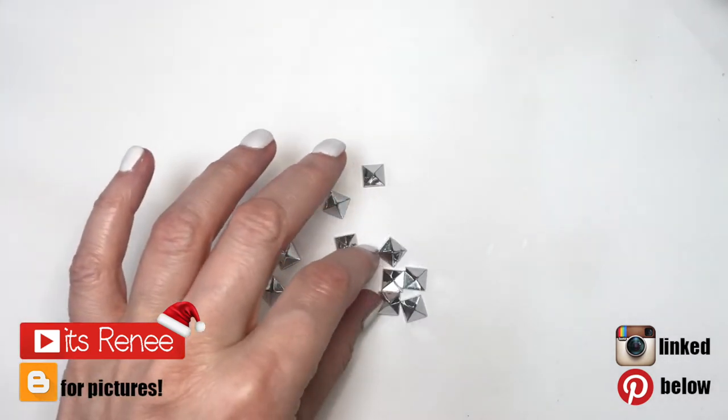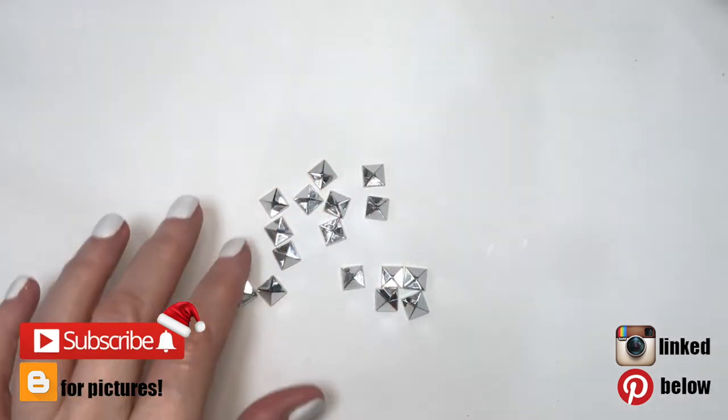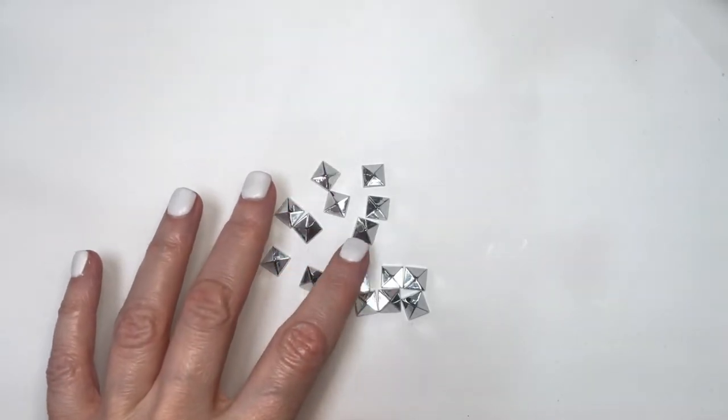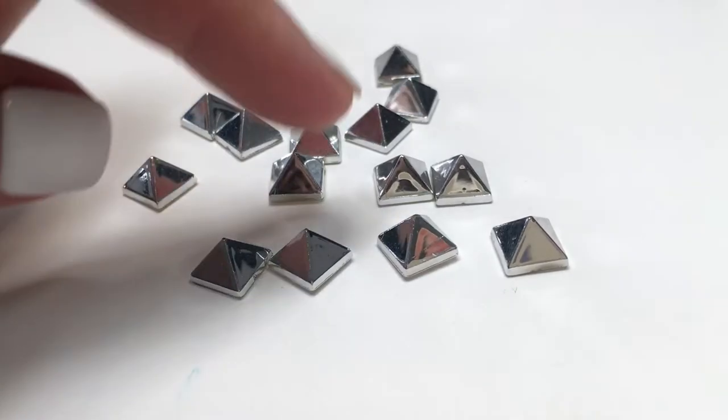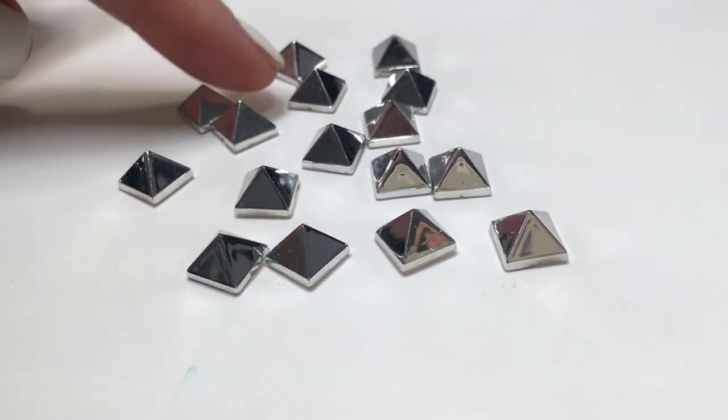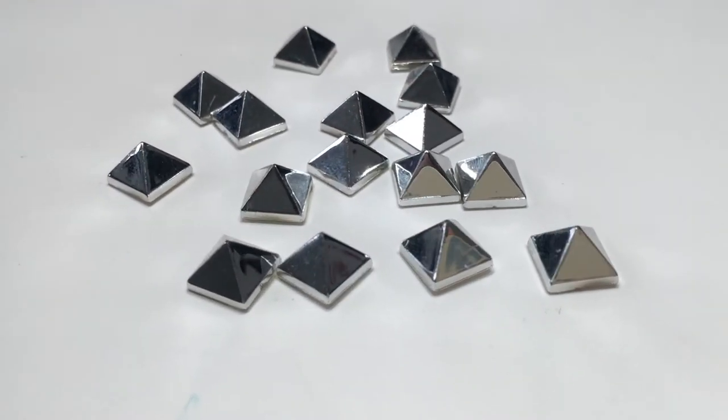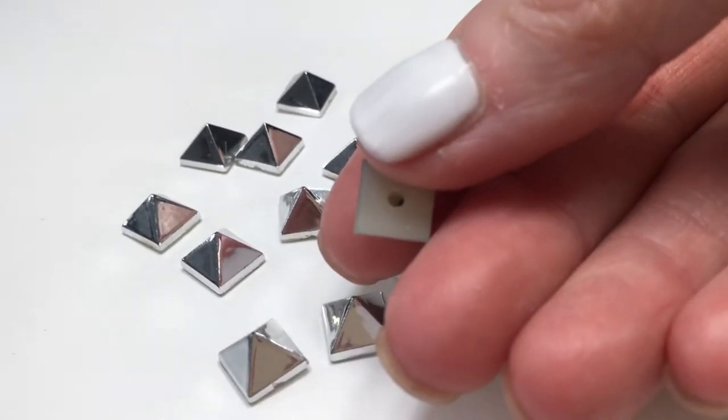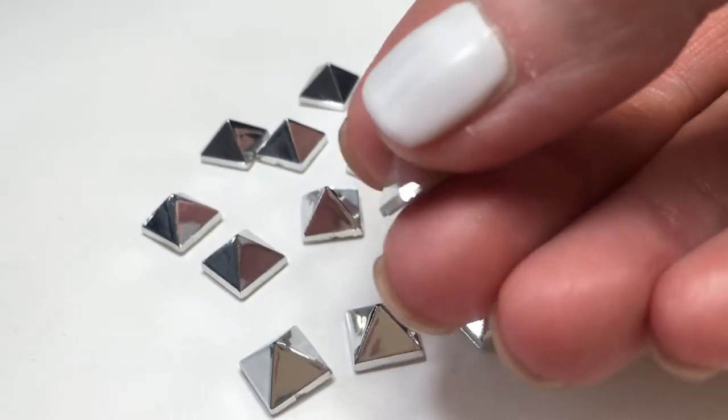Hey guys, it's Renee. For these Christmas tree earrings, I'm going to be using some rivets. The ones that I'm working with look like regular rivets, but they used to be part of a bag that I wasn't using anymore. I just removed the rivets. They have plastic underneath them and are flat on the bottom.